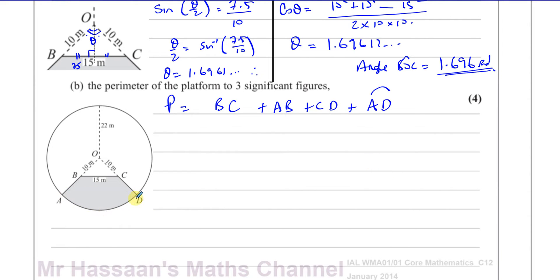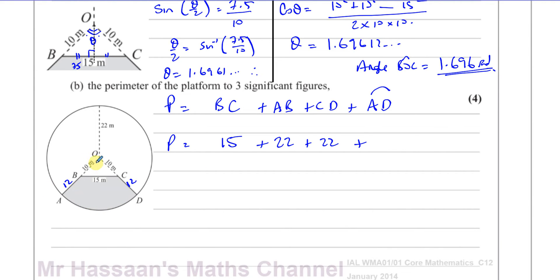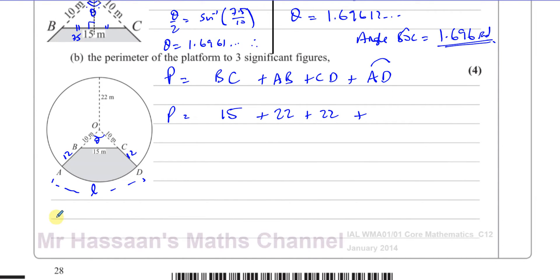AB and CD are both the same length. Since the radius is 22 and OB is 10, then AB = 22 - 10 = 12. So both AB and CD are 12. For arc AD, we use the sector OAD. The length of an arc is given by the formula R·θ, where θ is in radians. The radius here is 22, so arc AD = 22 × θ.